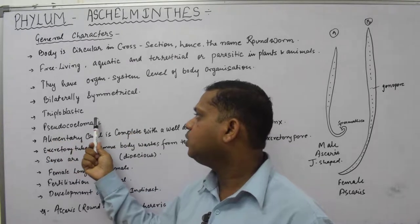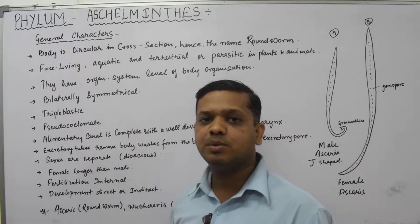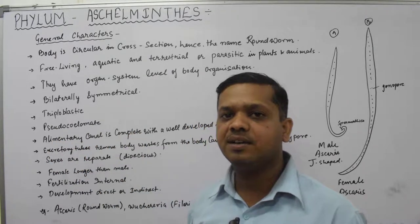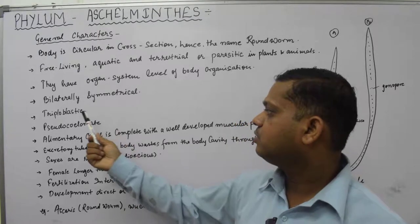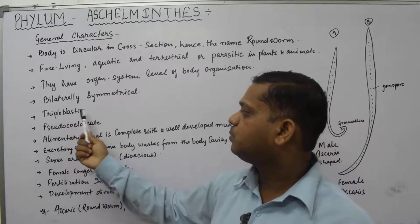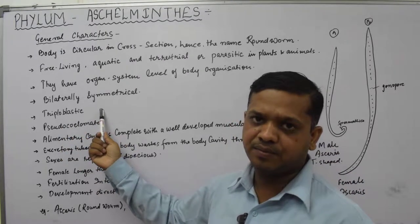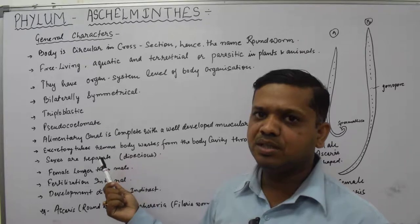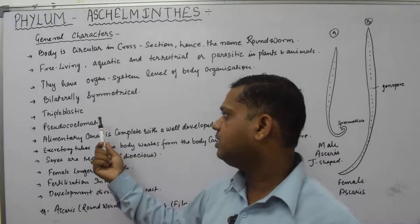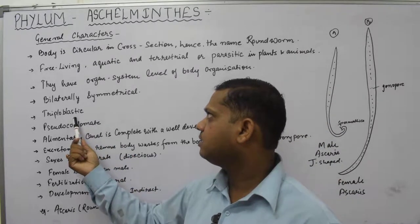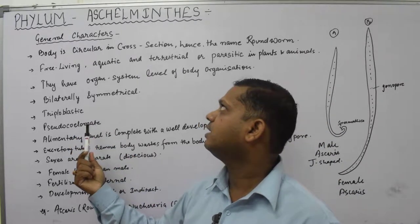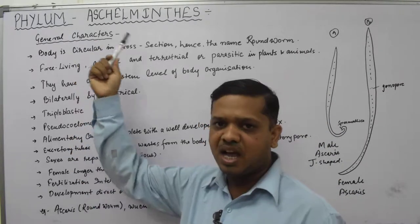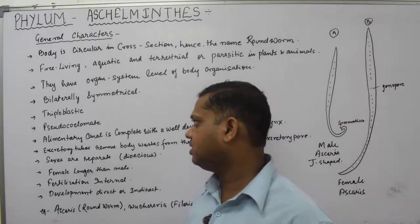They are triploblastic. Triploblastic means they have three germinal layers — ectoderm, mesoderm, and endoderm. These three layers are present in this particular phylum Aschelminthes.